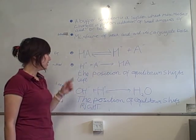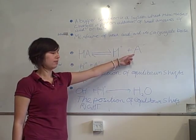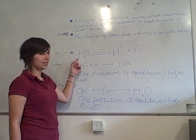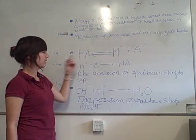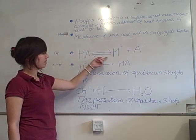So when acid is added, the H plus will react with the A minus on this side of the equilibrium, which will form the undissociated weak acid. So the position of equilibrium will shift to the left to form more HA to counteract the change of the H plus being added.